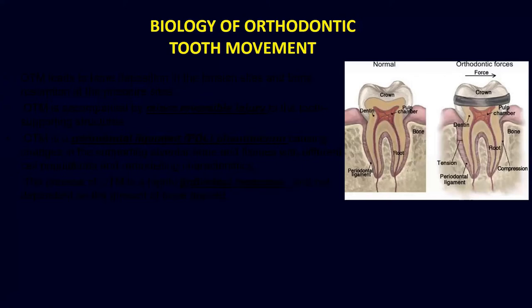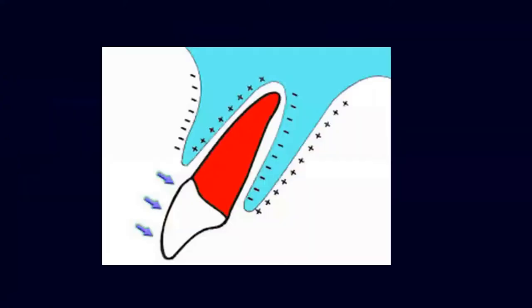This varies among different individuals as well. When a tooth moves, the force is applied on one side so bone resorption occurs on that side to give clearance to the movement of the root, and bone formation occurs on the other side. Apart from this, bone deposition also has to occur on the outer aspect in order to maintain the thickness of that bone.